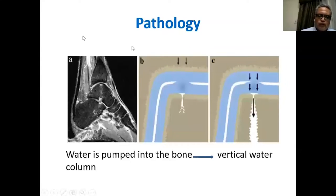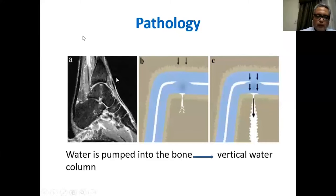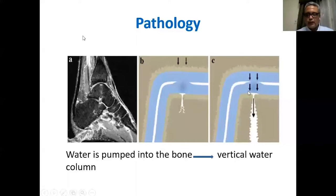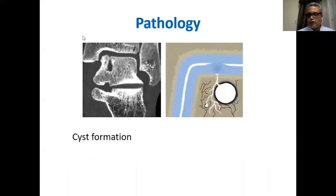Cyst formation may occur because of a valve mechanism: if you have a partial tear of the cartilage, it acts like a pump or valve allowing synovial fluid to flow in under axial load — the fluid passes from the cartilage surface into the subchondral bone, creating cysts. When you unload the cartilage, the valve closes, allowing pressure to increase inside the subchondral cysts. So you can imagine this like a one-way valve where synovial fluid flows in but is not allowed to return, creating cyst formation.